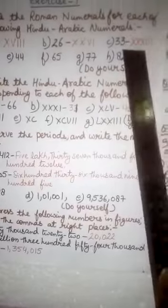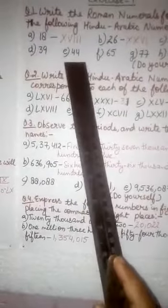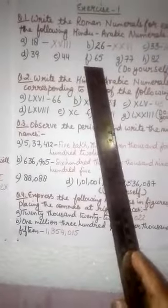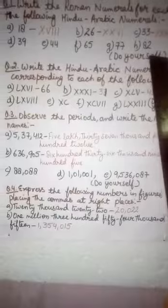Now, 33. 3 Xs and 3 Is means 33. Now, 4th is 39, 5th is 44, 6th is 65, 7th is 77 and 8th is 82. These parts you have to do yourself.